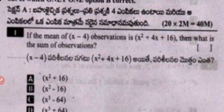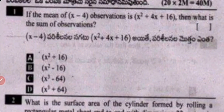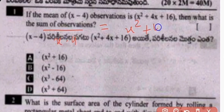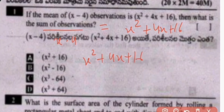Question 1: If the mean of (x minus 4) observations is (x squared plus 4x plus 16), what is the sum of observations? The sum of observations is equal to the mean multiplied by the number of observations, so it is (x squared plus 4x plus 16) multiplied by (x minus 4).